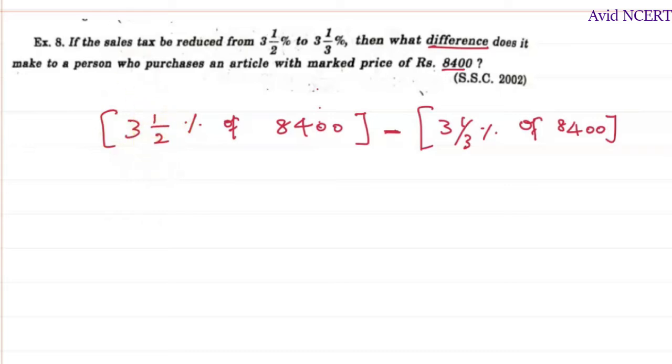So this is done as 3 times 2 is 6, plus 1 is 7, so it is 7/2 percent of 8400 minus - here again it is 3 times 3 is 9, 9 plus 1 is 10, so 10/3 percentage of 8400.